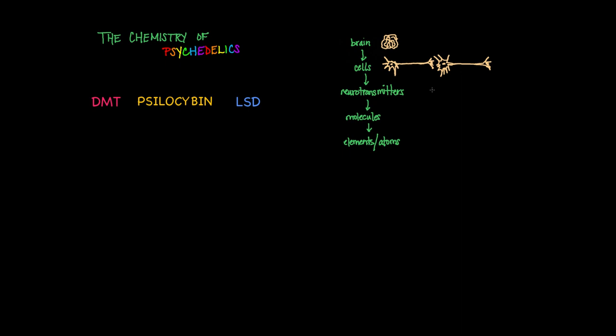One major neurotransmitter active within the brain and throughout your body is serotonin, which exerts its effects via various receptors including the 5-hydroxytryptamine or 5-HT receptors, of which there are many different subtypes. The molecular structure of serotonin consists of an indole, which is this bicyclic structure made up of a benzene ring and a nitrogen-containing pyrrole, as well as an amine group.